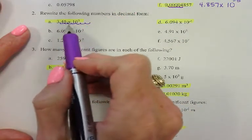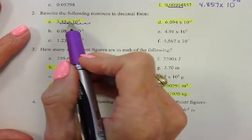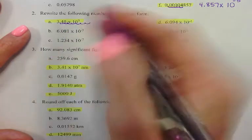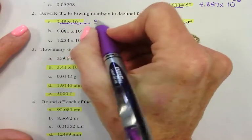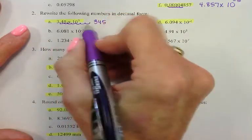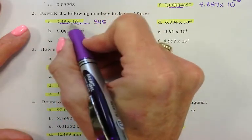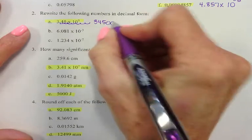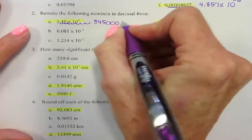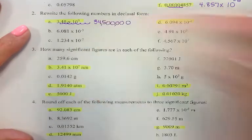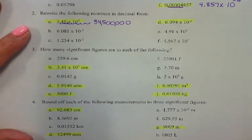What goes in the empty spots? Zeros. So my answer is 345 followed by five zeros: 34,500,000 is my final answer.